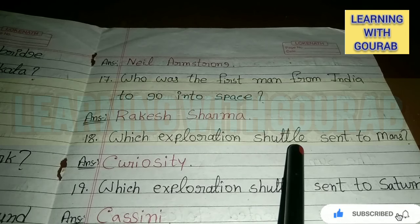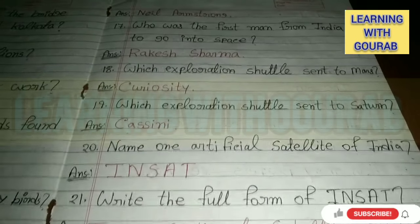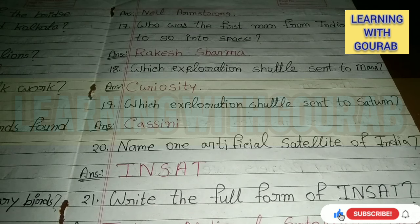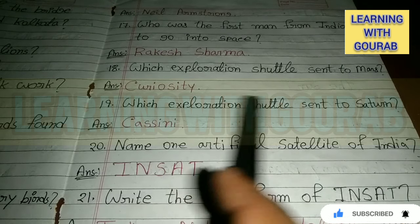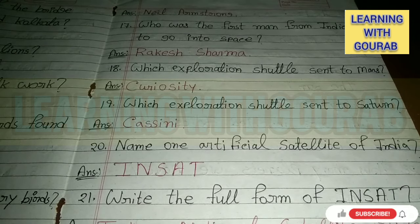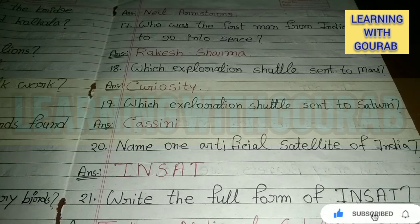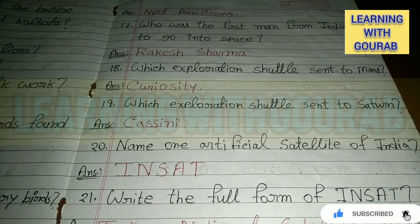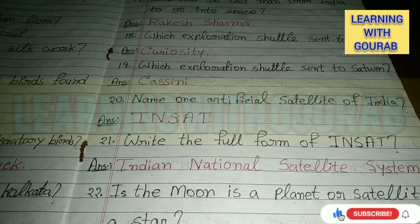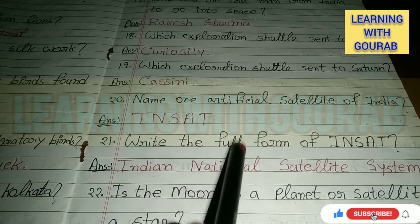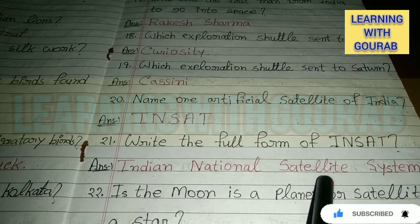Which exploration satellite was sent to Mars? Answer: Curiosity. Which exploration satellite was sent to Saturn? Answer: Cassini. Name one artificial satellite of India. Answer: INSAT. Write the full form of INSAT: India National Satellite System.